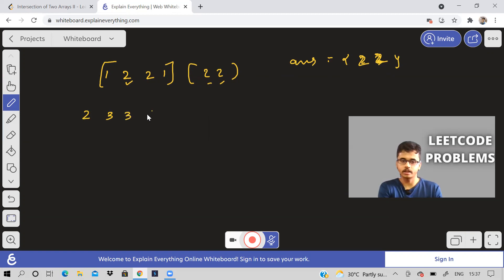You will see, okay, two occurs once here and it occurs two times here. So you will take only one two. Three occurs two times here and one time here, but you will take only one. Actually two occurs three times here, but two occurs only once here. So you will take two only once.